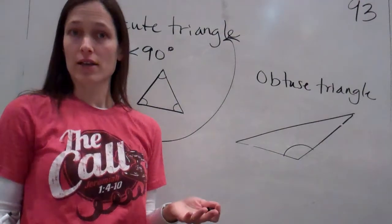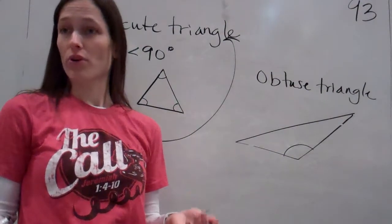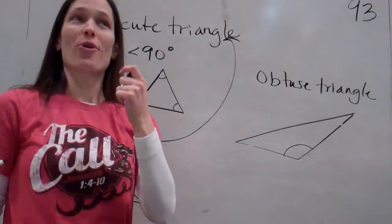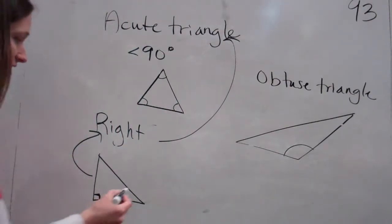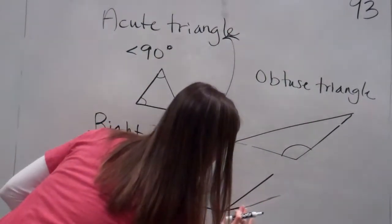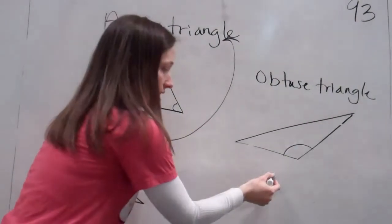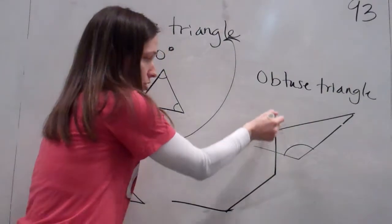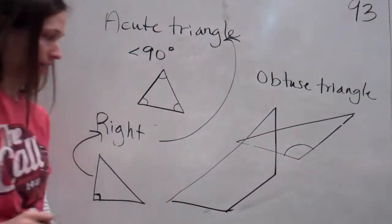You cannot make an obtuse triangle with more than one obtuse triangle. More than this. If I do, there's, whoops, there's one. And then if I start to try to make this angle obtuse, well, then you don't have a triangle. Got it?